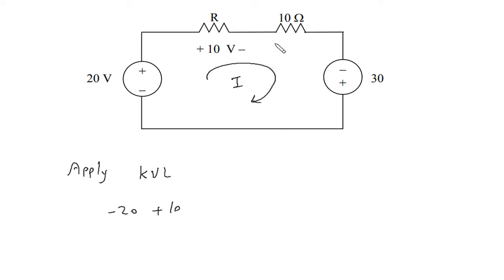Let us say this is plus, this is minus. So plus 10I, then minus 30. Minus 30 is equal to 0.